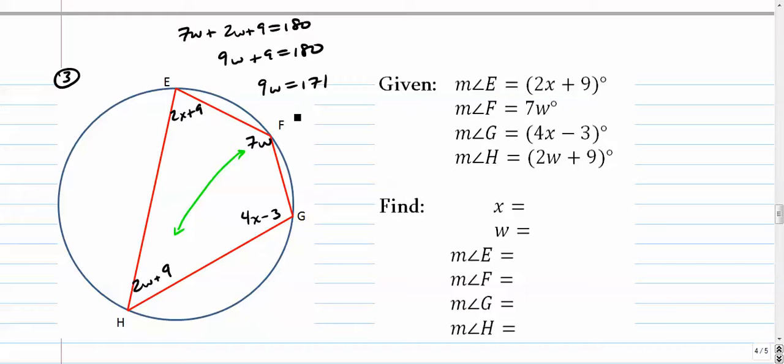So that's 90 plus 80. 81. That's 90. That's 19. W is 19.